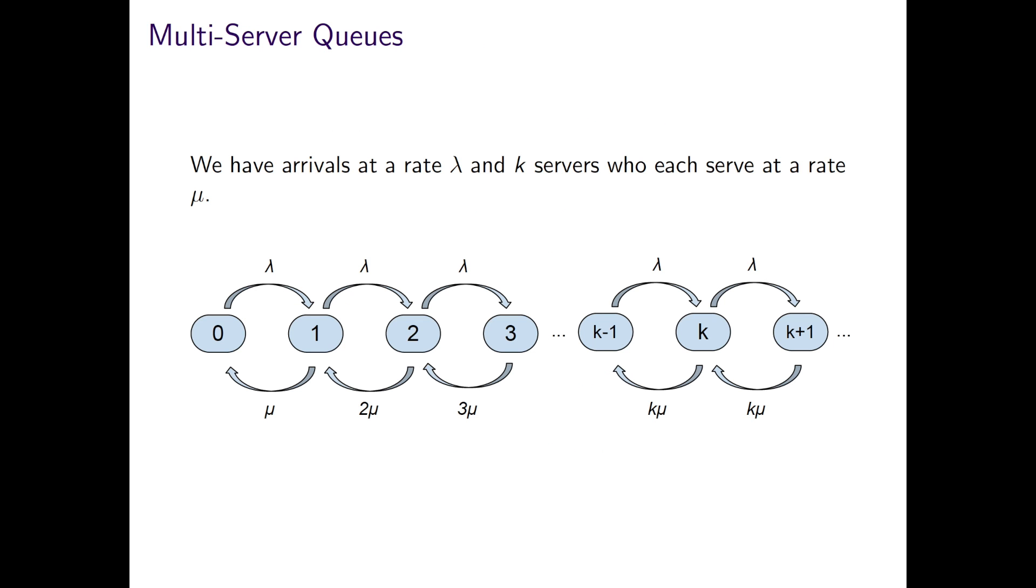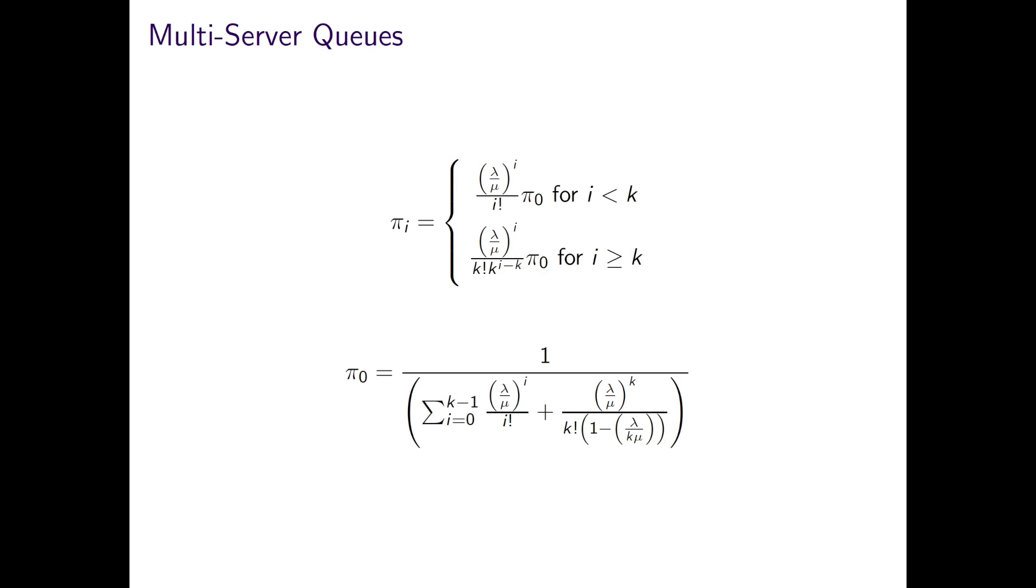Very briefly then, we can extend to multi-server queues. Here with k servers, such that as soon as k people are in the system, a queue will begin to form. And at most, therefore, the total service rate is k mu, when all k servers are busy. And with a bit more work, we can again go on to calculate the probability of i patients in the system, which requires also the probability of the system being empty, pi_0.